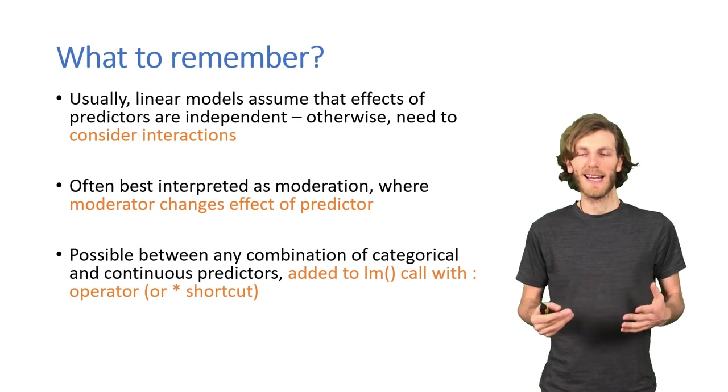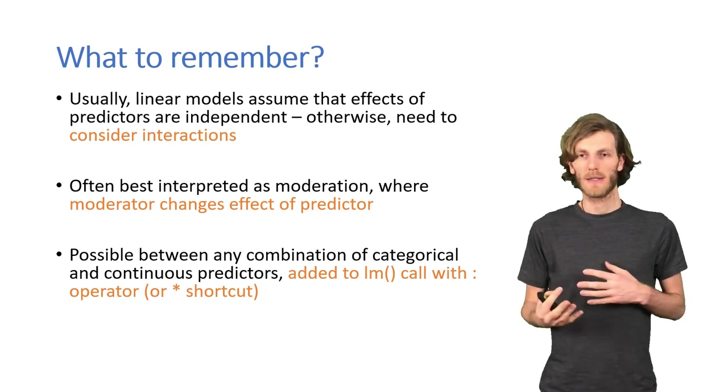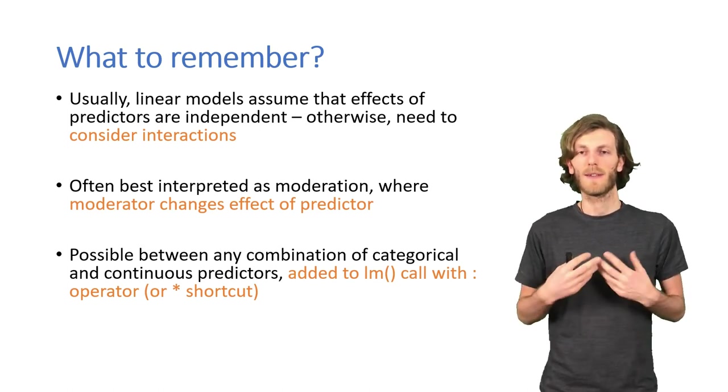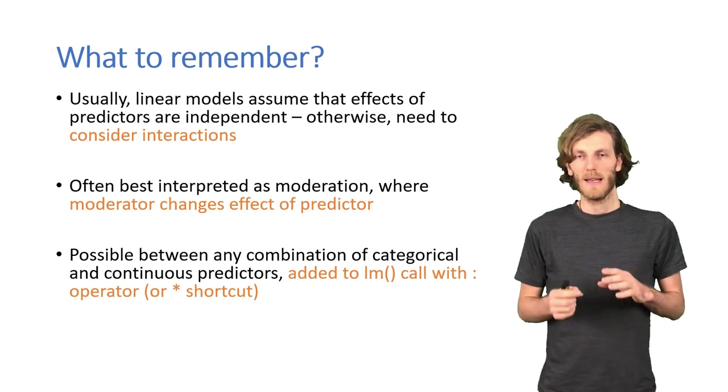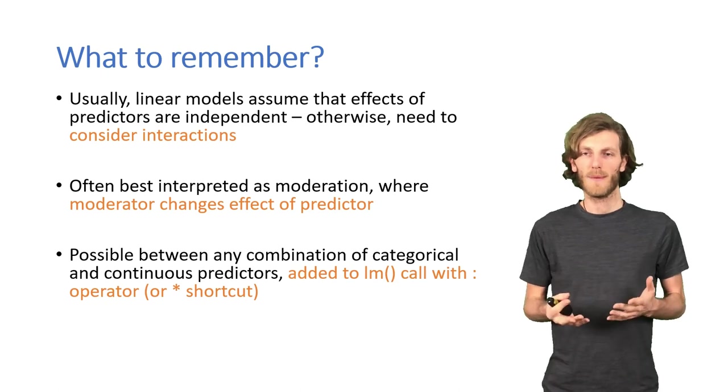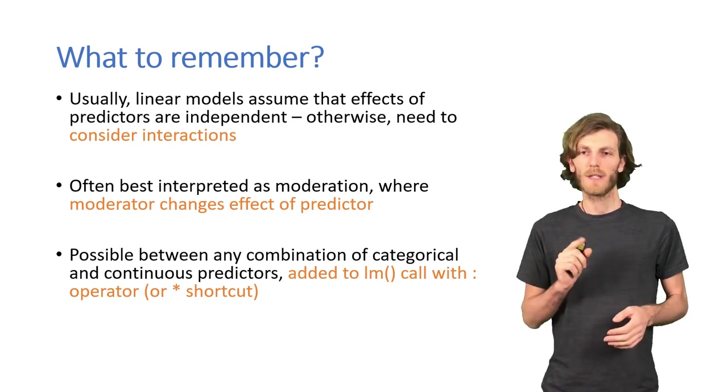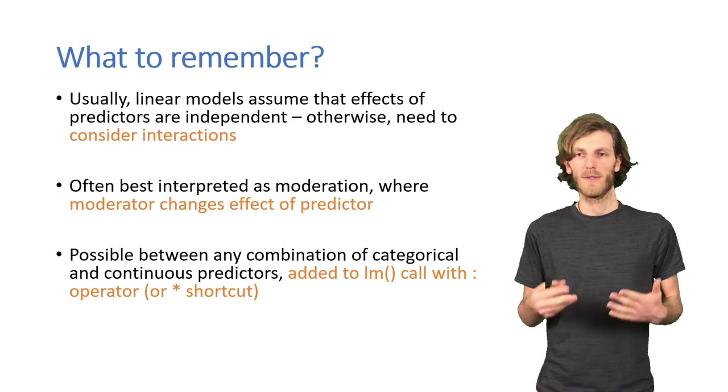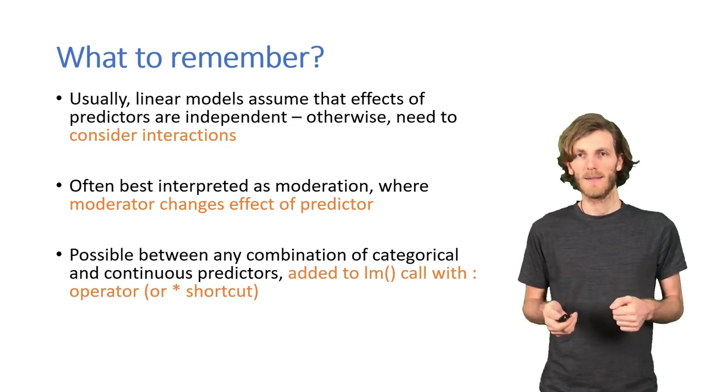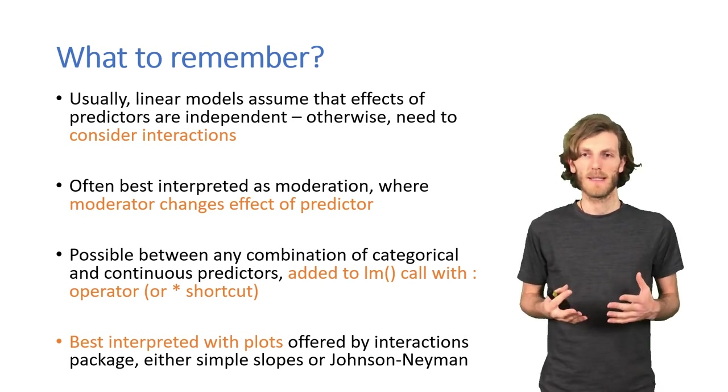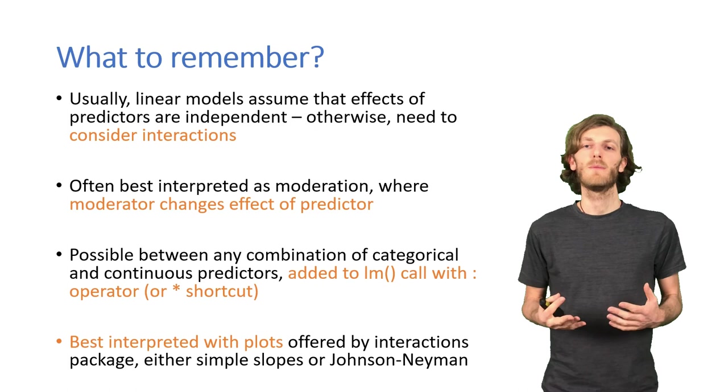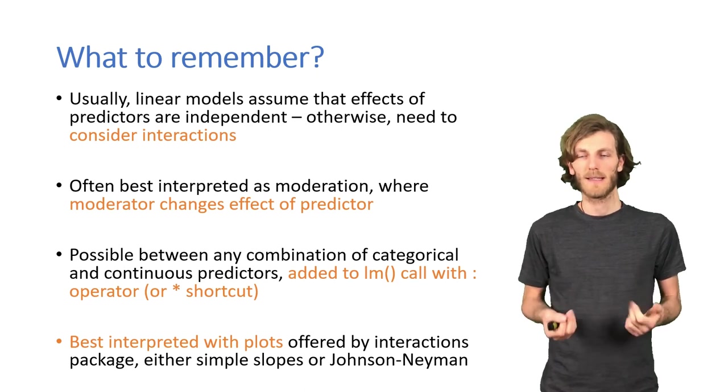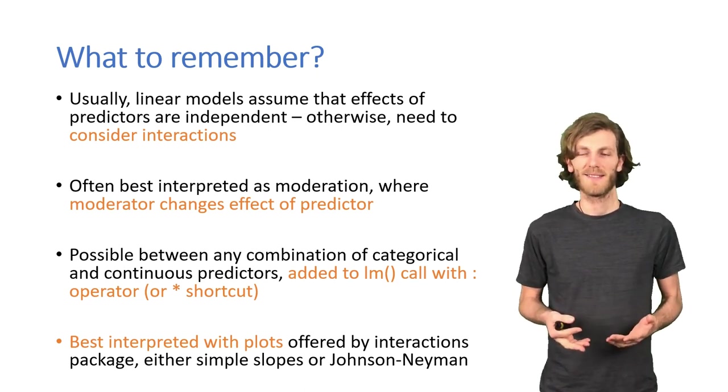Interactions are possible between any combination of categorical and continuous variables. There can also be more than two variables, then it just quickly gets rather complicated or difficult to interpret. Interactions can be added to the lm function call, either with the colon operator to add individual interactions, or with the asterisk or multiplication symbol as a shortcut for getting the main effects and the interactions. And in general, interactions are best interpreted by quite quickly moving to the plots. The interactions package offers the plots I showed you here and we'll practice that in class. So I'll see you there. I'm going to wrap this up.